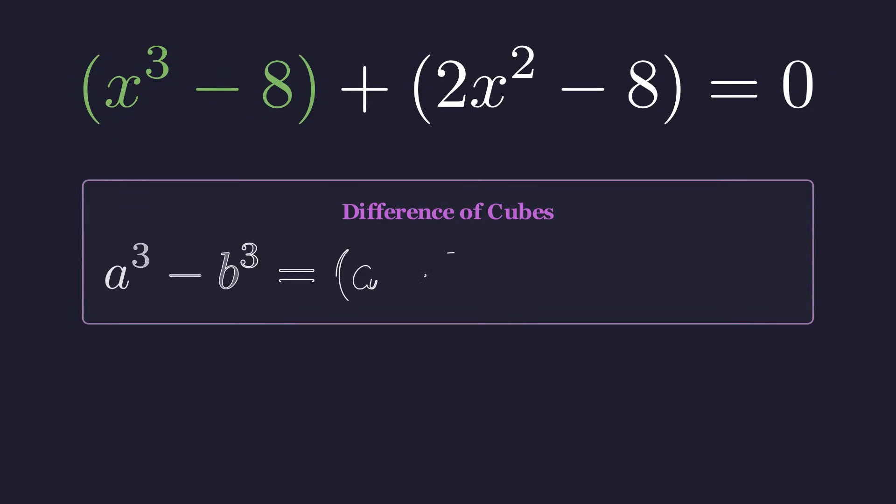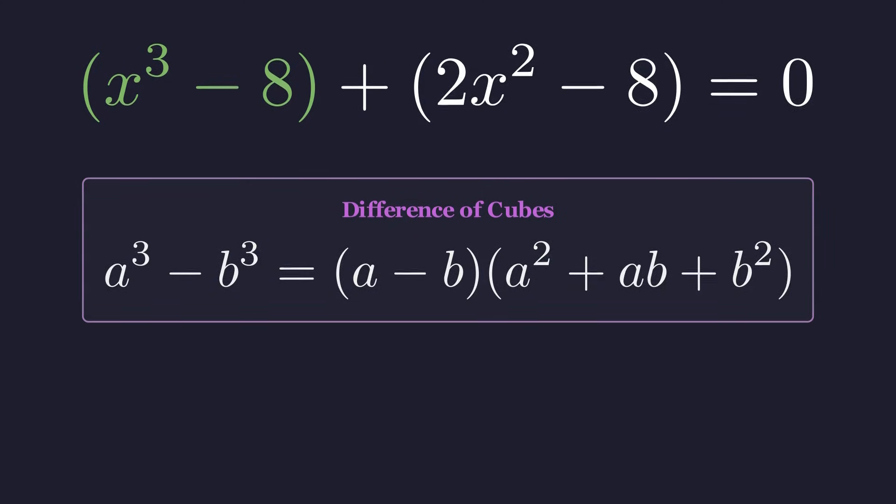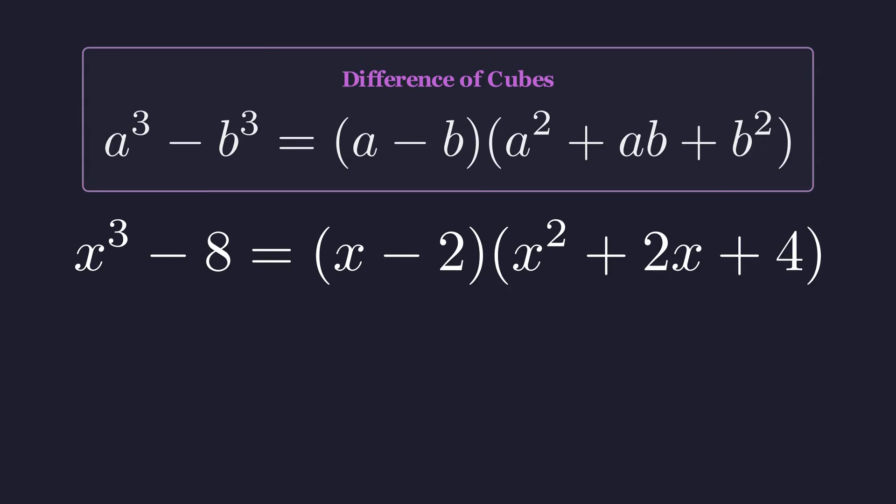The formula for a difference of cubes is a cubed minus b cubed equals the quantity a minus b times the quantity a squared plus ab plus b squared. Applying this formula where a is x and b is 2, we get this factored form. Now let's turn our attention to the second term.